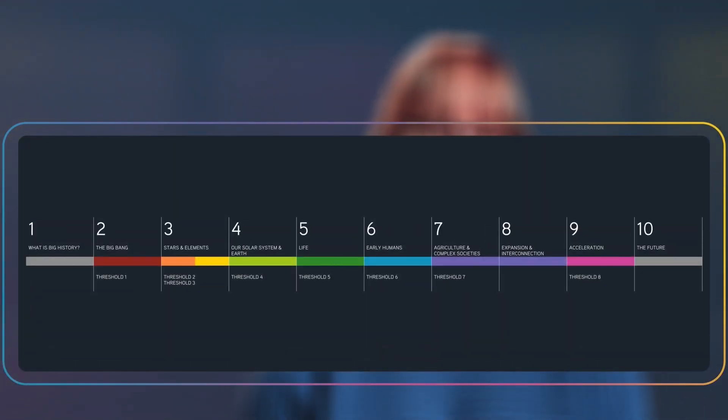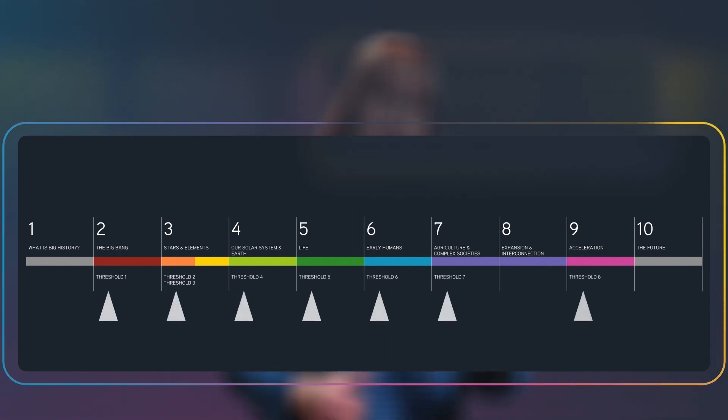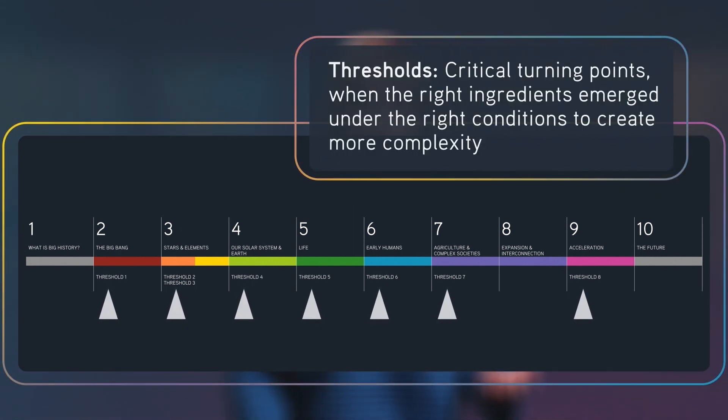The ten units are like chapters in a book. They divide the Big History story into blocks of time that will help us organize things. The eight thresholds, on the other hand, are crucial turning points in the Big History narrative when something really big changed.